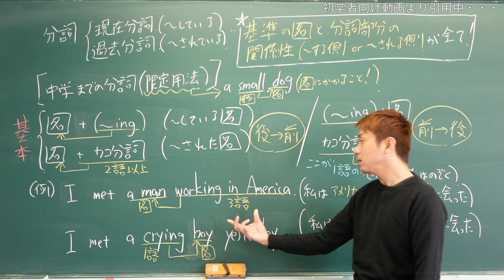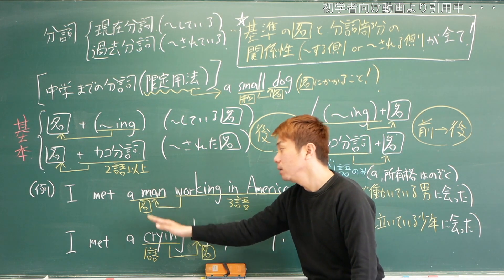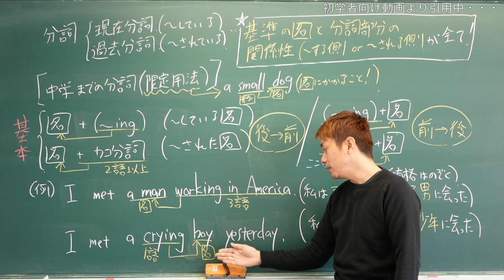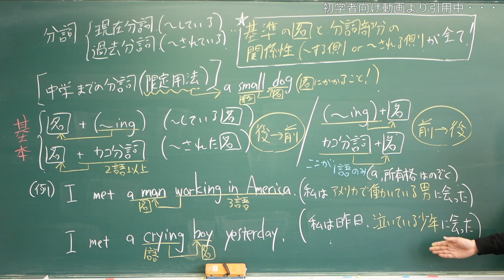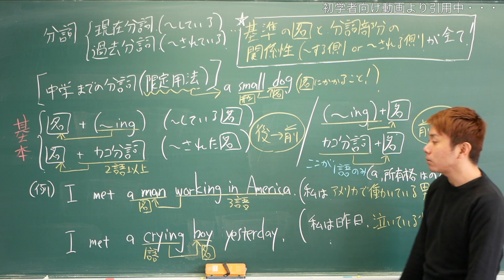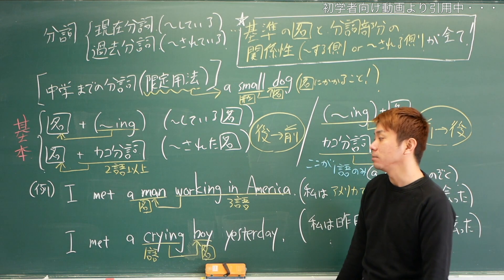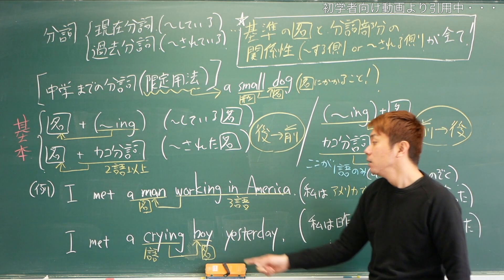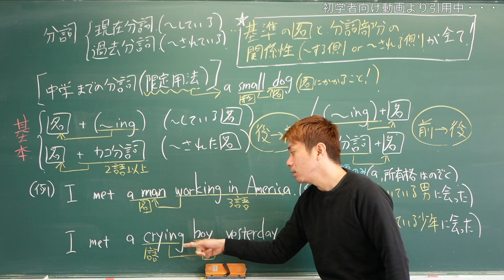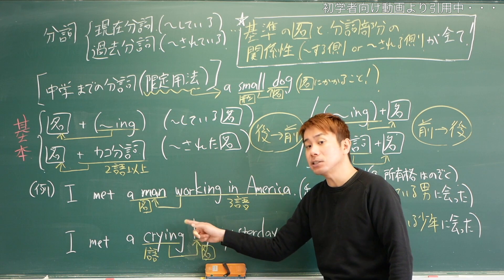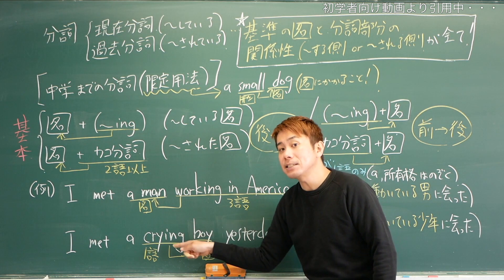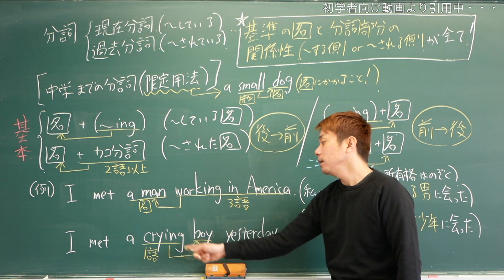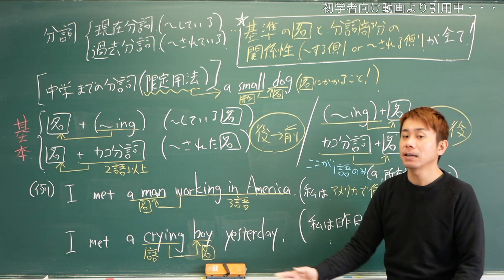working in Americaっていうのは、3単語でアメリカで働いている男。ここにかかって限定されるから限定用法というんです。下の文章、I met a crying boy yesterday. 私は昨日、泣いている少年にあった。こういう単語ね、泣いている赤ちゃんとかでも中学時代見たことあると思います。このa の部分はちょっとカウントに入れといてね。ここが1単語だから、a boy cryingって後ろから前にかけるんじゃなくて、crying boy、泣いている少年って感じで、前から後ろにかけてあげる。